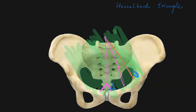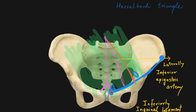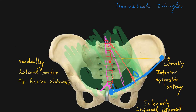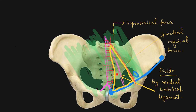After the ligaments we start Hesselbach's triangle. Hesselbach's triangle is bounded laterally by the inferior epigastric artery, inferiorly by the inguinal ligament — which runs between the anterior superior iliac spine and pubic tubercle — and medially by the lateral border of the rectus abdominis muscle. This Hesselbach's triangle is divided into two parts: the supravesical fossa and the medial inguinal fossa, as medial and lateral parts respectively, by the medial umbilical ligament.